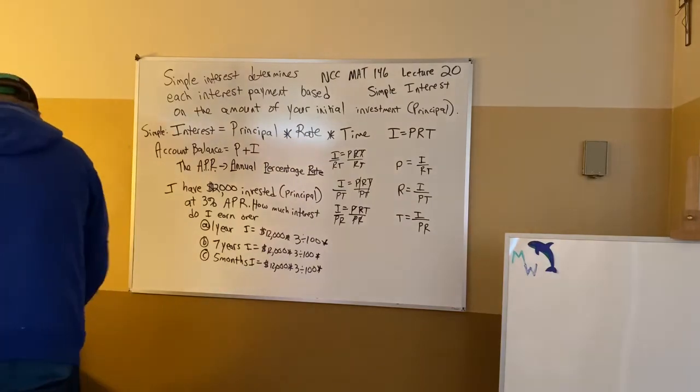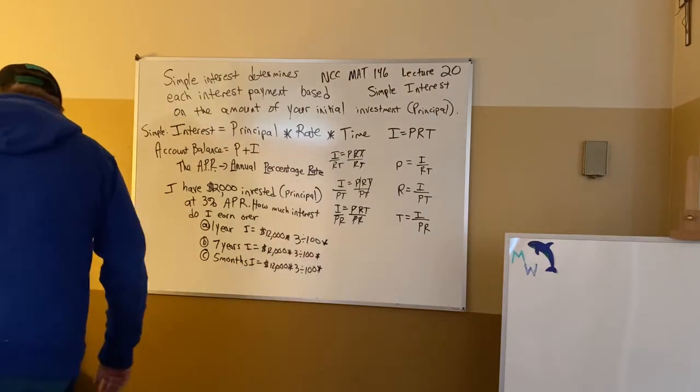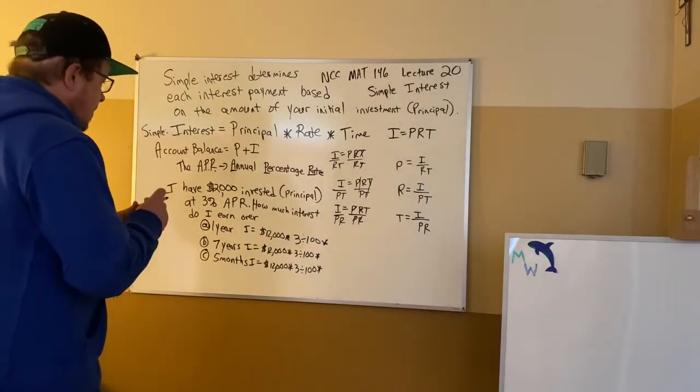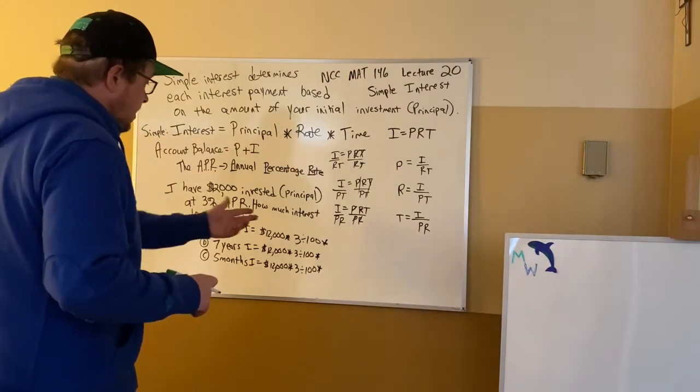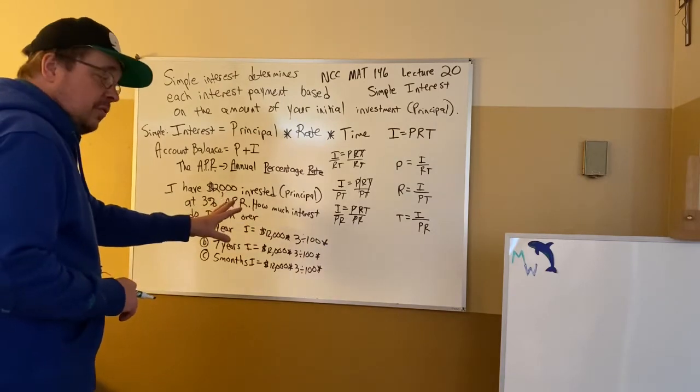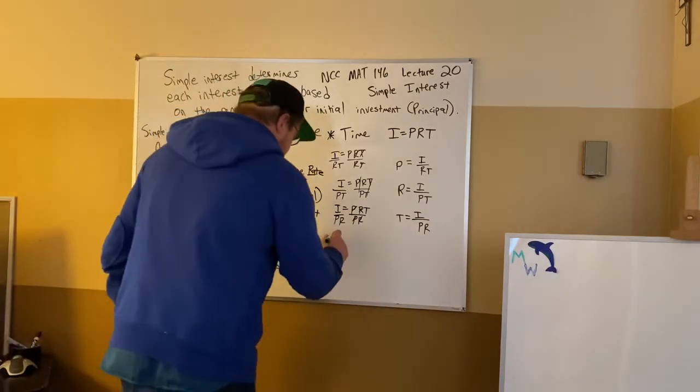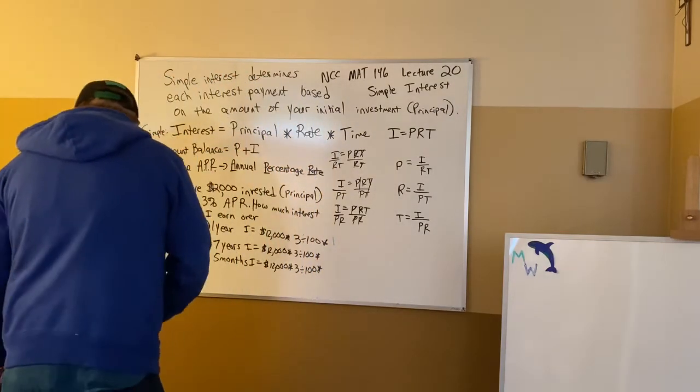And now I have T for each one of these. The amount of time each one is in investment. So on this one the first one is 1 year and this is an annual percentage rate so 3 is perfect the way it is and I'm figuring out how many years was that. It was 1 year so I'm going to multiply by 1.